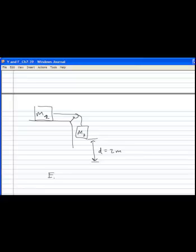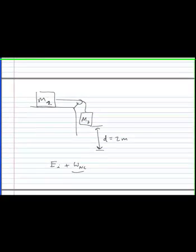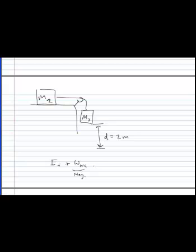Okay, so I've got my initial energy, plus the work done by non-conservative forces, that's a negative number, plus work done by external forces, is my final energy. And I'm going to define my system as being the blocks, the Earth, and the surfaces here. So everything will be in my system, so I have no external forces reaching in. I do have work done by non-conservative forces, I have friction.